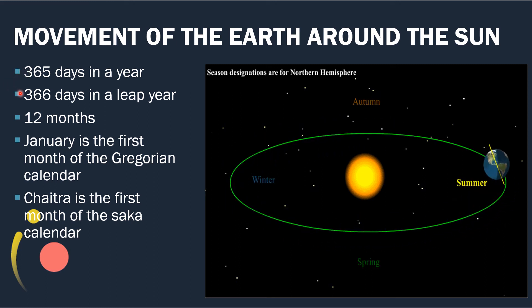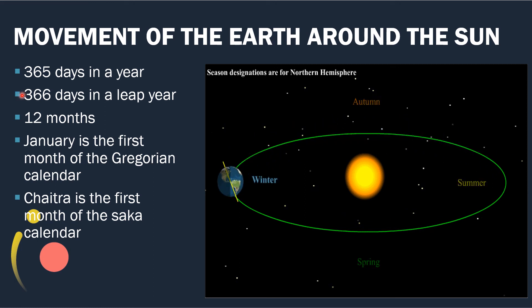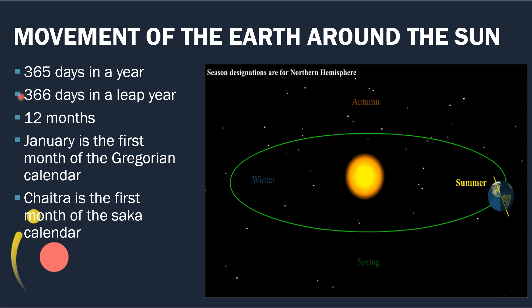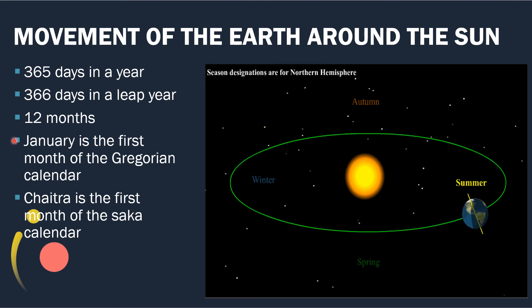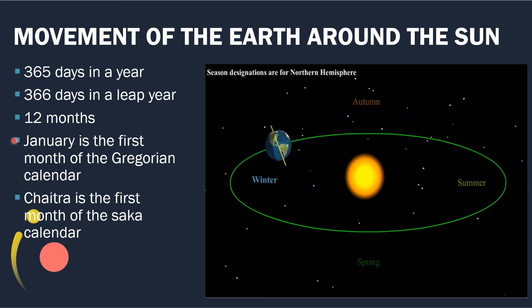A leap year has 366 days. Each calendar has 12 months. January is the first month of the Gregorian calendar.